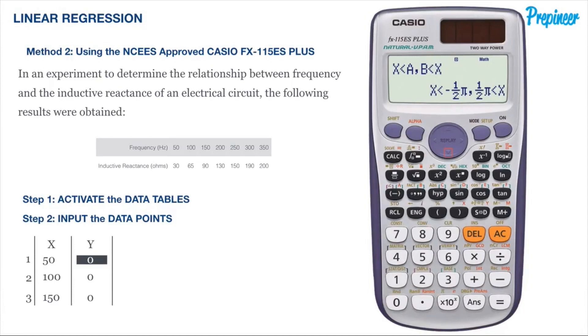You will now be on the first row of the Y column, which represents the Y data points correlated with those X data points. Input all of these values just as you did with the X values. Once you're complete, hit the AC button. We can now define the variables of the regression line with all of our data points input into the calculator.